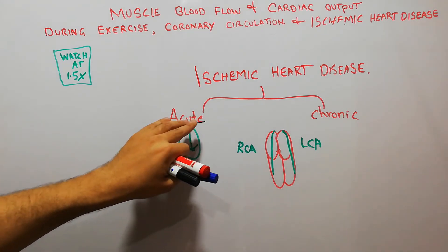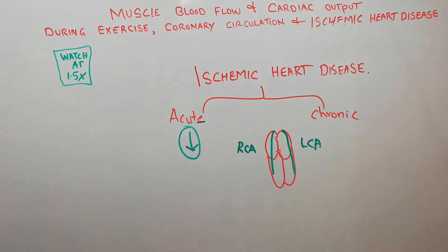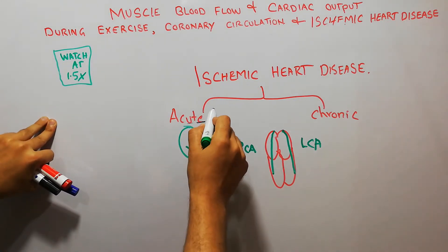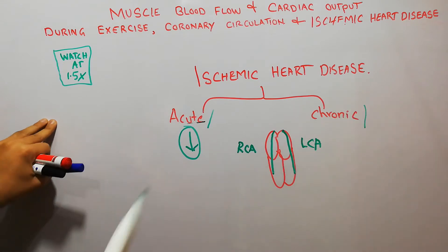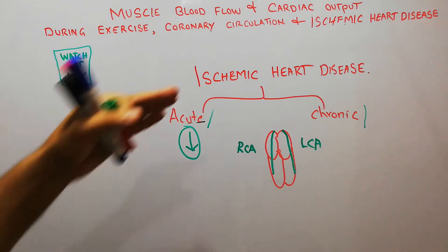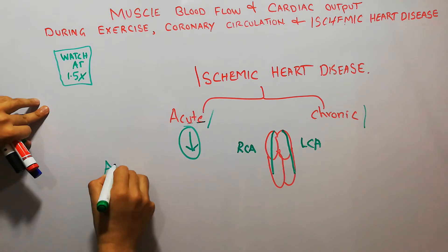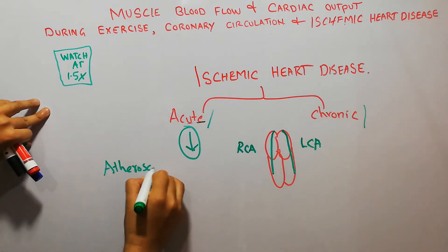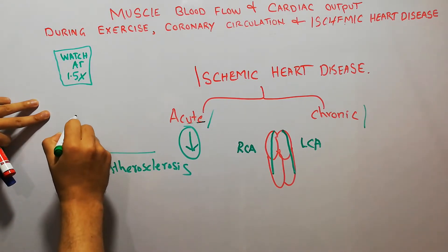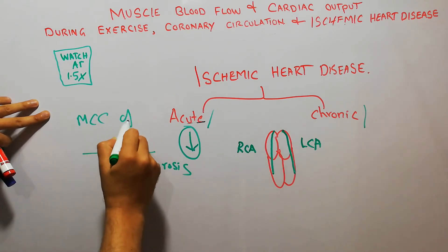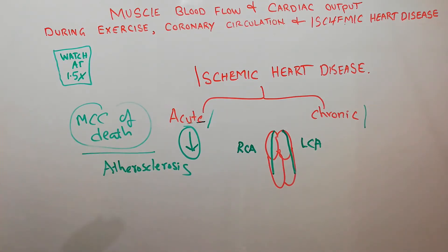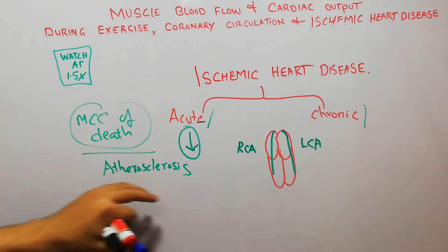Ischemic heart disease could be acute — sudden in onset — or it can be chronic, a slow process occurring over weeks, months, or years. Ischemic heart disease is important because it is one of the most common causes of death in the world, and the most common cause of ischemic heart disease is atherosclerosis.